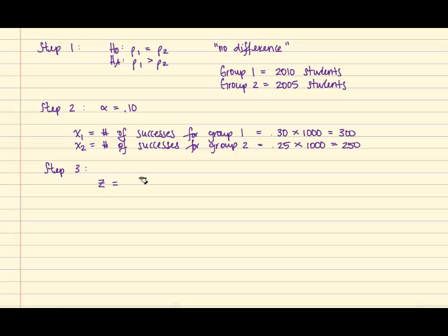It follows a z. And we have the quantity of P hat 1 minus P hat 2 minus the quantity of P1 minus P2. In the denominator, we're taking the square root of P bar times Q bar times the quantity of 1 over N1 plus 1 over N2.